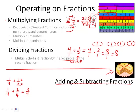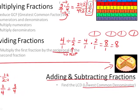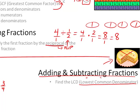You have to have the same common denominator to add or subtract fractions. You want to find the lowest common denominator by looking at what the two denominators can both multiply by in order to get something. The lowest common denominator is actually the same thing as the lowest common multiple.